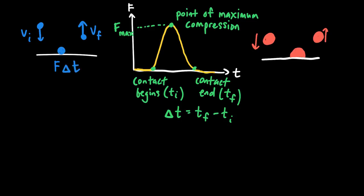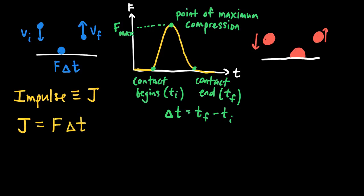The force F acts over a time interval delta-T. The product F times delta-T is a new quantity we're going to define, called impulse. For impulse, we use the capital letter J, so impulse J equals force times time interval delta-T. To find the impulse delivered to an object you need to know the time interval and the force, but the force on the graph isn't just the F-max value — that's only the force at one point. Instead, we define an average force value.